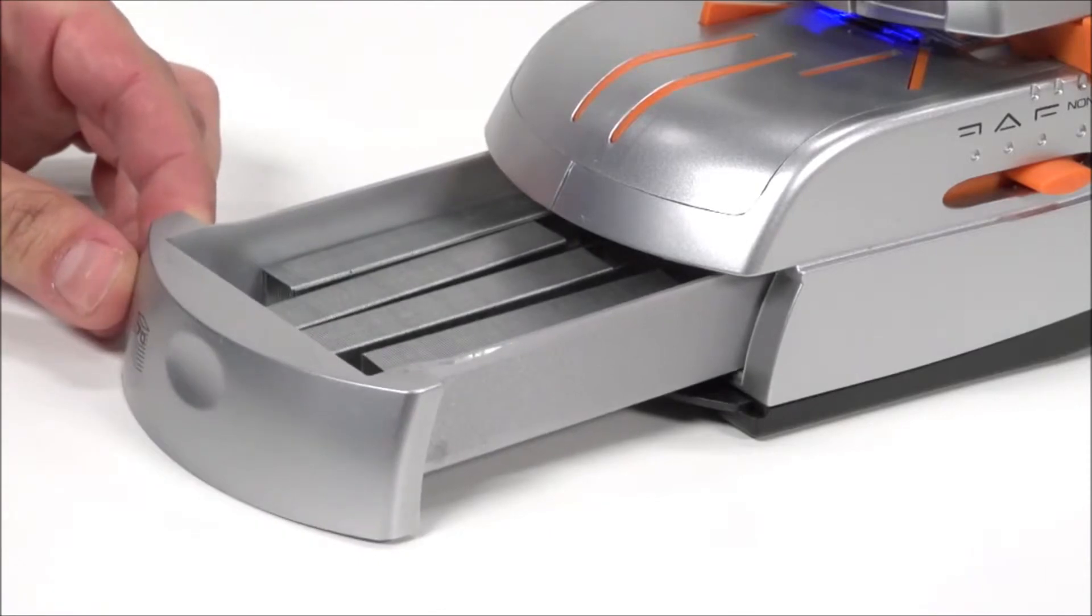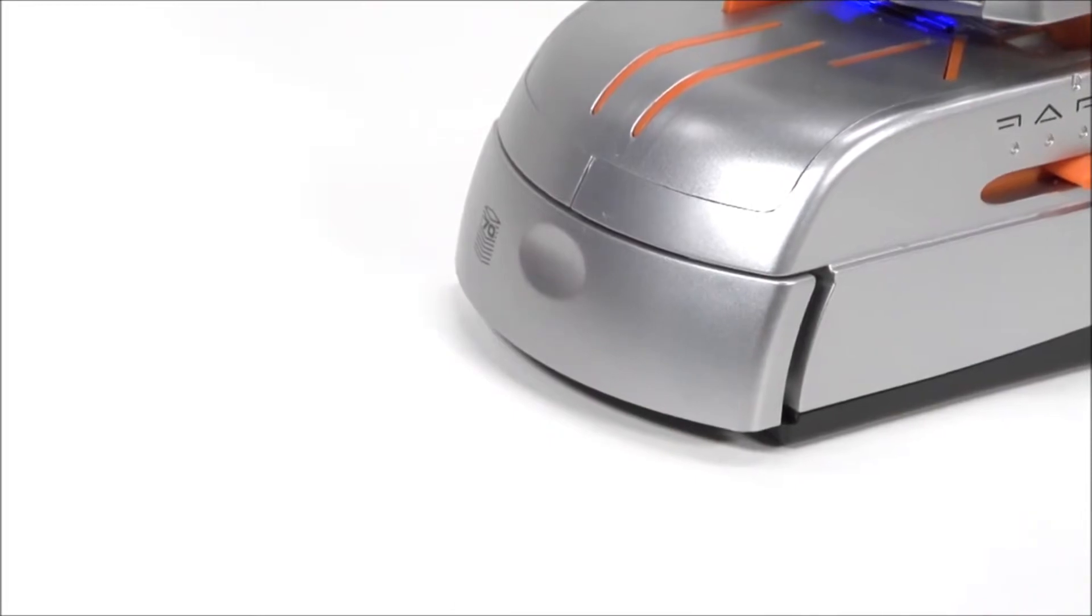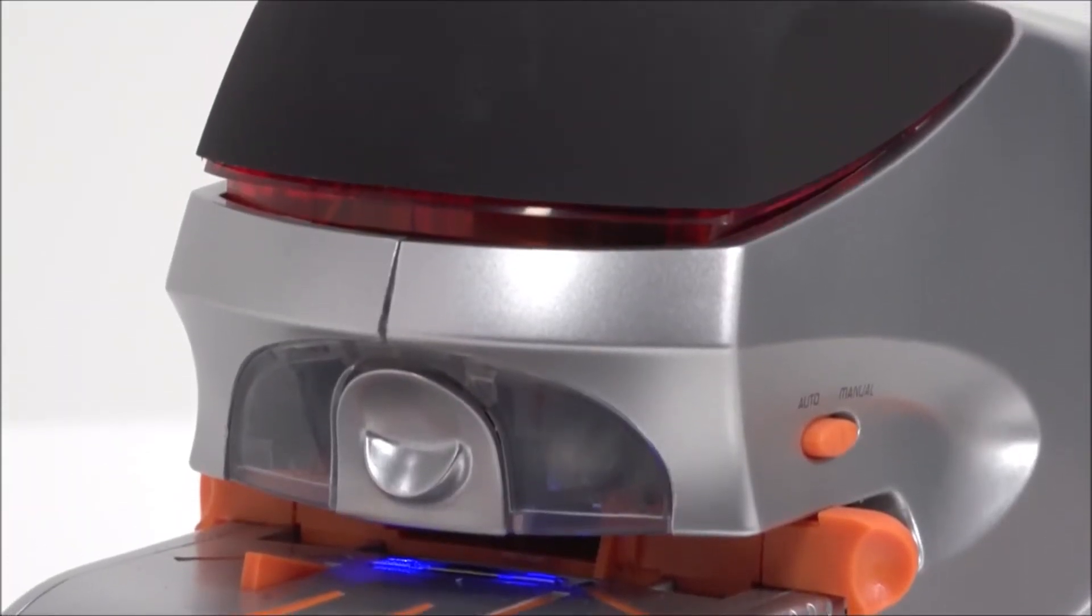Staples are conveniently stored in an onboard staple storage area on the front of the stapler that opens with one simple touch. And an indicator light blinks to let you know when it's running low on staples.